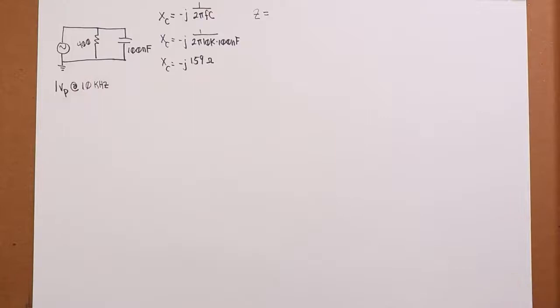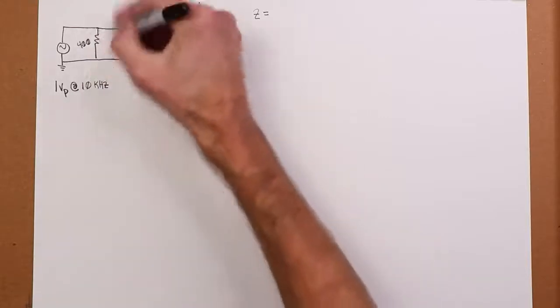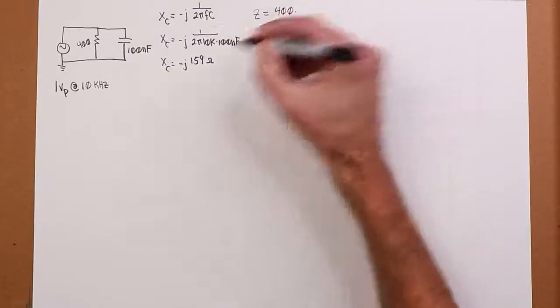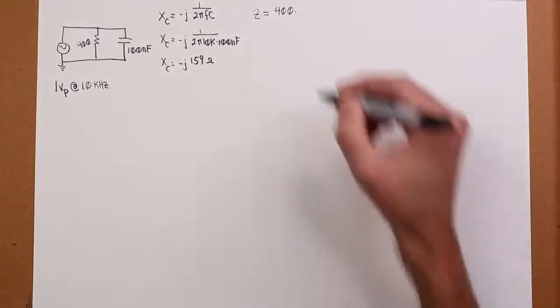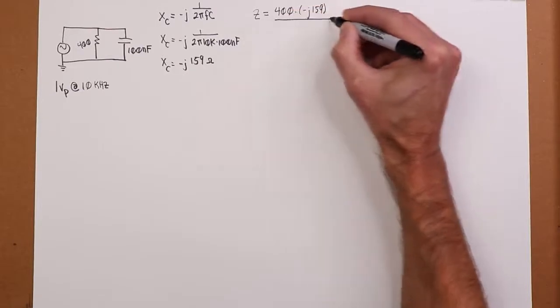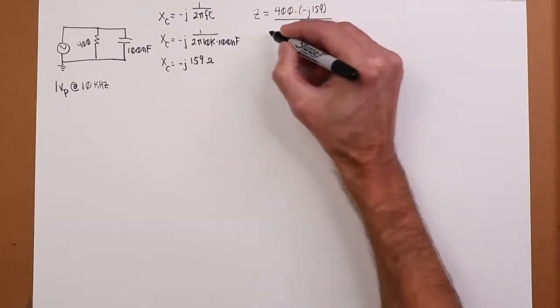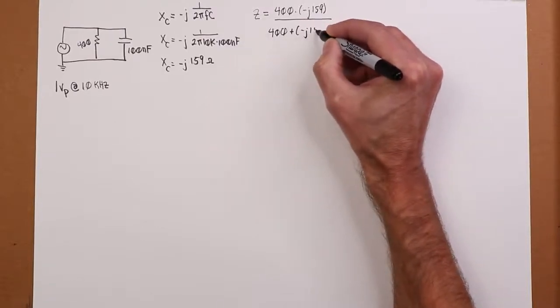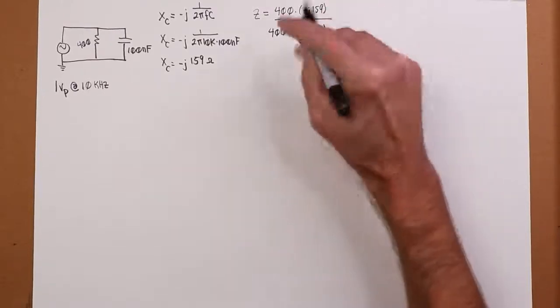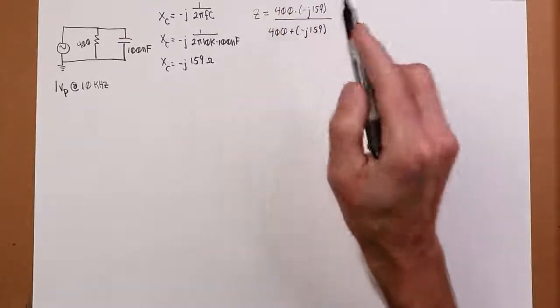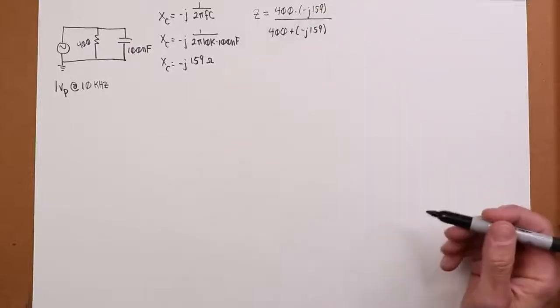Like in any parallel circuit, we can use the reciprocal rule or we can use product sum rule. We only have two of them, so product sum rule would work out pretty well here. So we can say that Z would have to be 400 times the negative j159 and then divided by the sum, 400 plus negative j159. I'm going to put that capacitive reactance in parentheses so that we don't have a problem with the minus sign. So that doesn't look like 400 minus 159 over here.